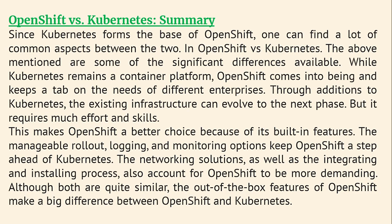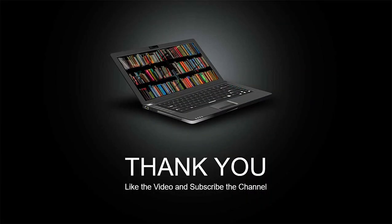OpenShift is a better choice because of its built-in features. The manageable rollout, logging, and monitoring options keep OpenShift a step ahead of Kubernetes. The networking solution and integration and installation process also make OpenShift more appealing. Although both are quite similar, the out-of-the-box features of OpenShift make a big difference. Thank you for watching — if you found the video helpful, please like and subscribe to the channel.